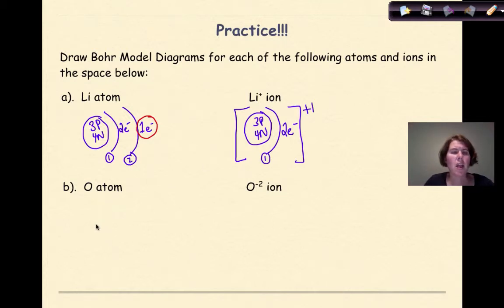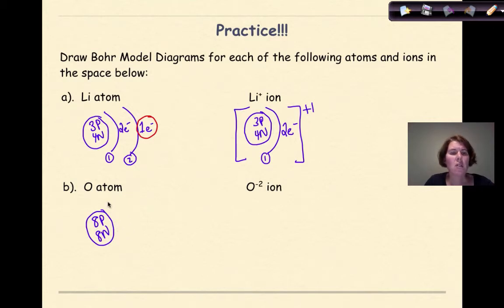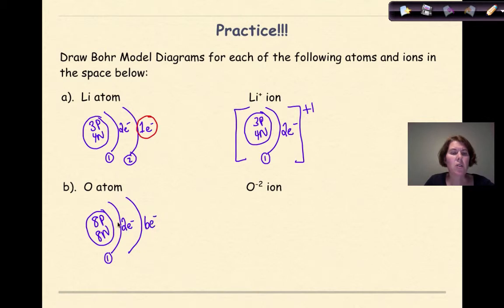For the oxygen atom: 8 protons and 8 neutrons in the nucleus. Oxygen has 8 electrons total — 2 in the first shell (the maximum), and 6 in the second shell, since 6 + 2 = 8. That gives us the second shell as the outermost shell.